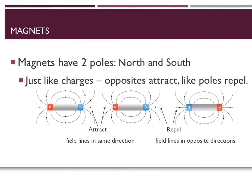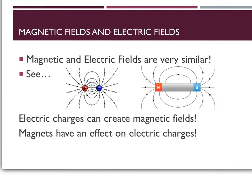Magnets have two sides called poles, named north and south. Just like charges, opposite poles attract and like poles repel. You can see in the picture that when a north and south pole come together, their field lines show they work in the same direction. Whereas with two south poles next to each other, the field lines are in opposite directions, so they repel — the magnetic fields don't work together.